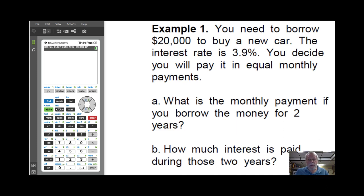So let's look at an example. Say you need to borrow $20,000 to buy a new car. The interest rate is 3.9% and you're going to pay in equal monthly installments. What is the monthly payment if you borrow the money for two years and how much interest is paid? So it's just a standard financial question.